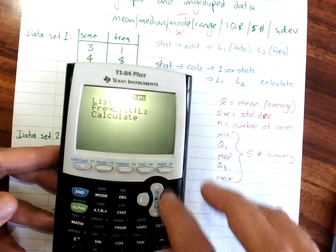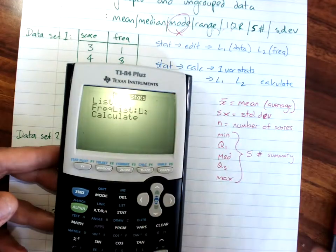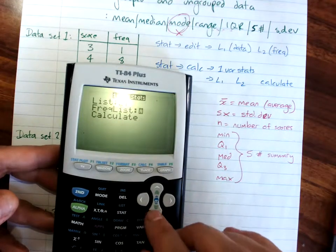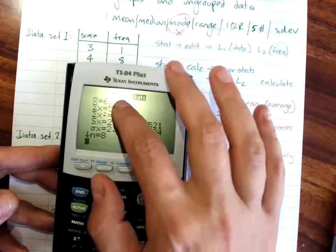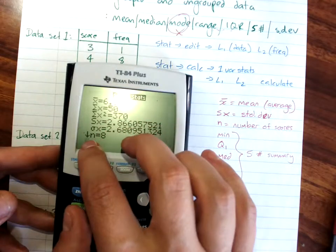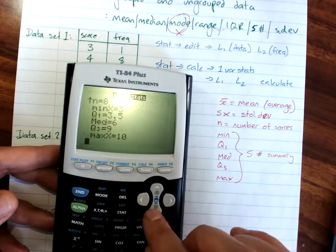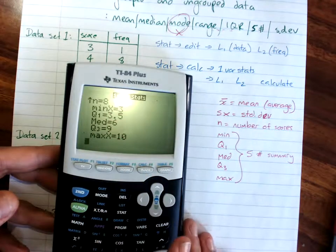So we're still L1 for our data, but we clear the frequency list and calculate. And there it is, our mean, standard deviation, number of scores, five number summary, and everything we need.